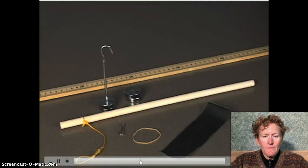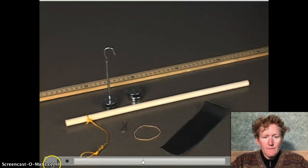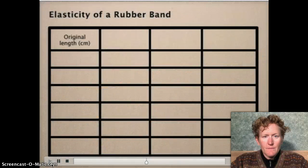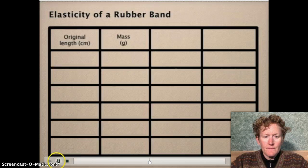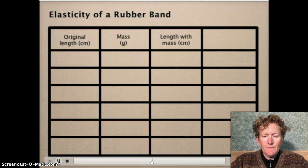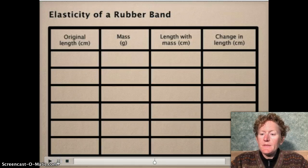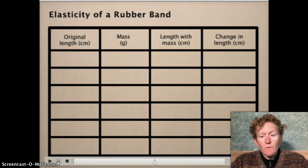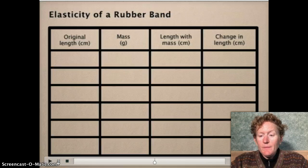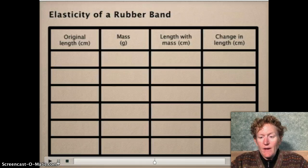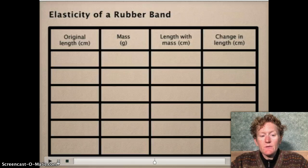Here are the materials for the lab. Before starting the procedure, we created a table with the following columns: original length in centimeters, mass in grams, length with mass attached in centimeters, and change in length in centimeters. This table is in your lab sheet, so don't worry about writing this down. Many of the numbers are written down for you as well, but just watch how they set up the lab. You don't need to do this in person, you don't have these materials, so it's okay to just watch.